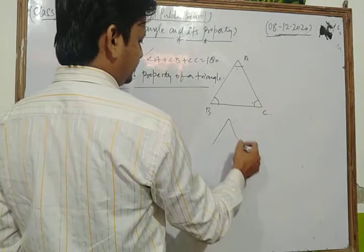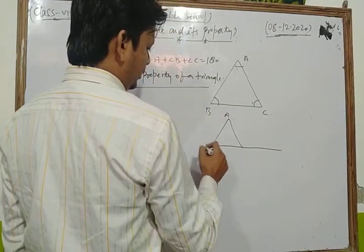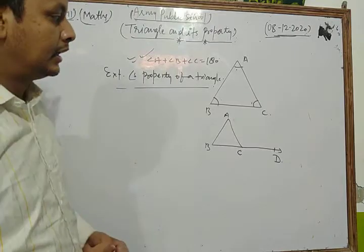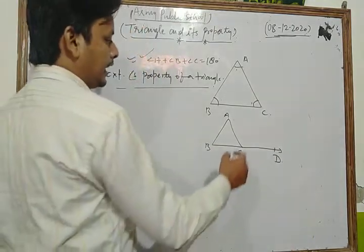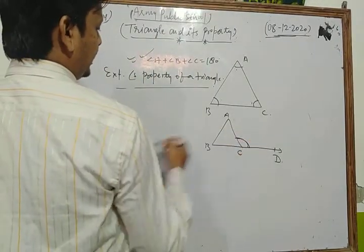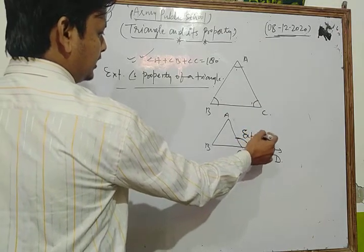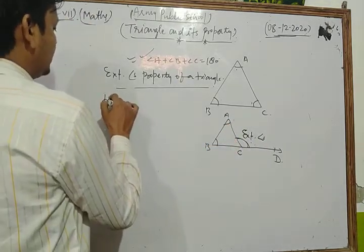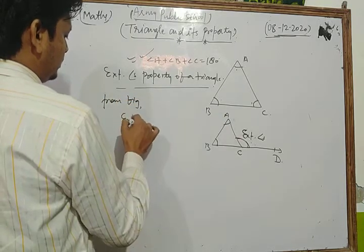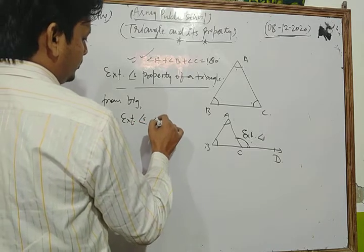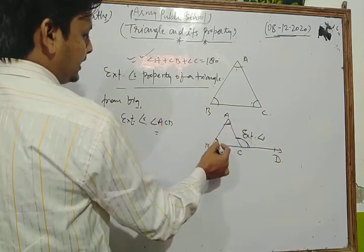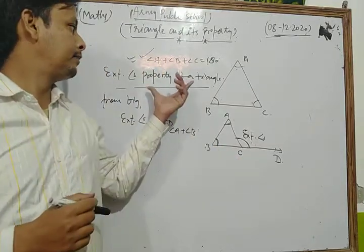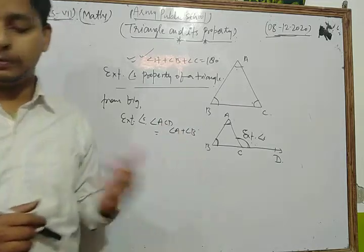Next we discuss the exterior angle property of a triangle. Suppose we draw triangle ABC and its side BC is produced to point D. Then angle ACD forms an exterior angle. The exterior angle ACD is equal to the sum of its two opposite interior angles — that is, angle A plus angle B. This is another most important property of a triangle.